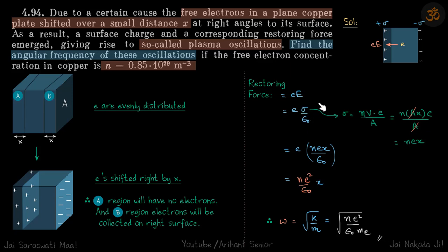What is sigma? Sigma is the charge per unit area. We have assumed the area to be A, so the volume of this region will be Ax. The number of electrons in this region will be Ax times N, that is N times the volume.